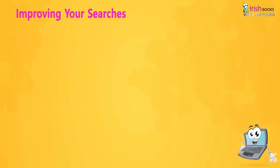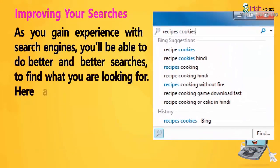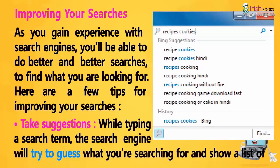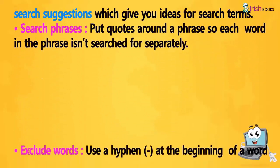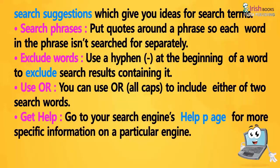Improving your searches: As you gain experience with search engines, you will be able to do better and better searches to find what you are looking for. The search engine will try to guess what you are searching for and show a list of search suggestions, giving you ideas for search terms. Search phrases: Put quotes around a phrase so each word in the phrase isn't searched for separately. Exclude words: Use a hyphen at the beginning of a word to exclude search results containing it. Use OR in all caps to include either of two search words. Get help: Go to your search engine's help page for more specific information on a particular engine.